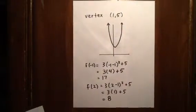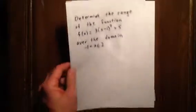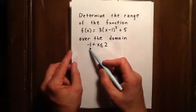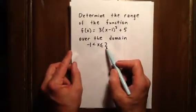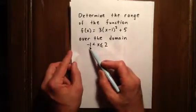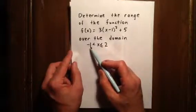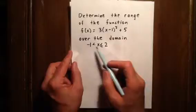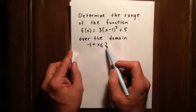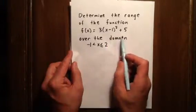The endpoints of the domain, the end values of the domain, are -1 and positive 2. So I'm going to figure out what the y value equals when x is -1, and I'm going to figure out what the y value equals when x is positive 2 in this equation.